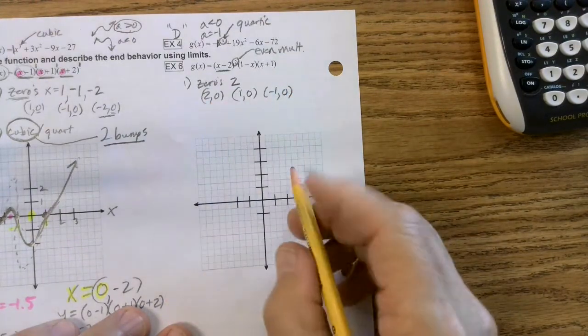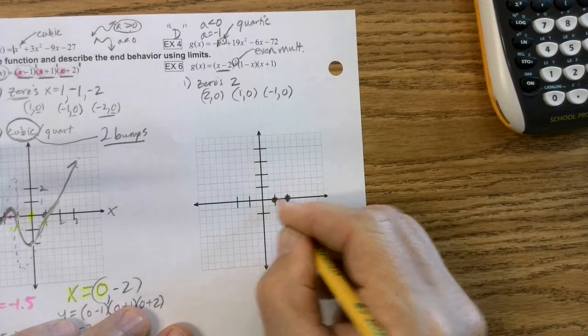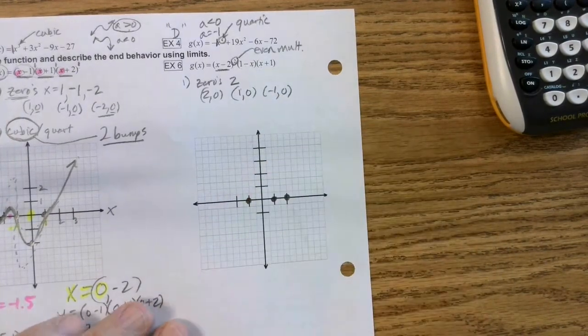So the first thing we have to do is plot these points just to get our bearings straight. So there's two zero, there's one zero, and there's negative one zero. So we've got some work to do.